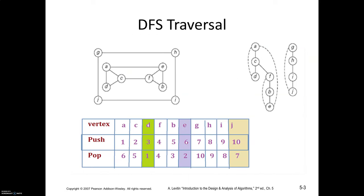Now let's look at another example. In this graph there are 10 vertices. Since we are following lexicographic order, we start with A first. To traverse this graph by applying DFS we use a data structure called a stack. Push A to the stack, then C, then D — for A, even though all three are adjacent vertices, following dictionary order we consider C as the first adjacent vertex, giving us A, C, D. With that you have reached a dead end.